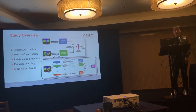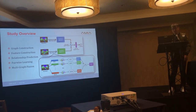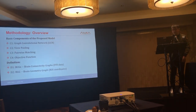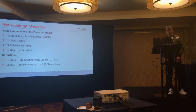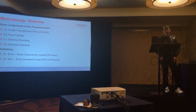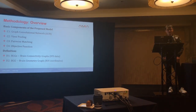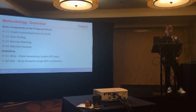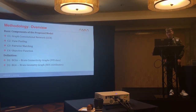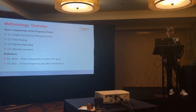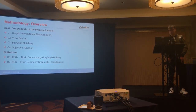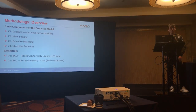This is the overview of the study and the basic components of the proposed model. There are four components: the Graph Convolution Network (GCN), the view pooling operation, the pairwise matching, and the objective function for optimization of the model. The definitions of BCGs and BGGs have been introduced earlier.